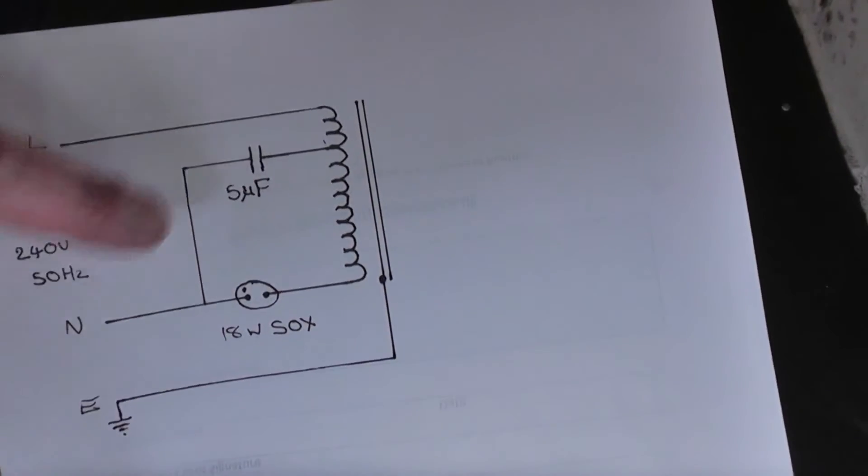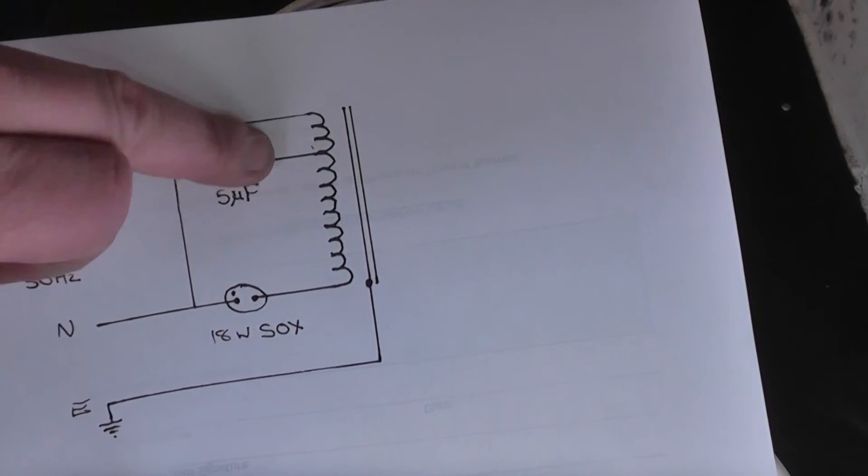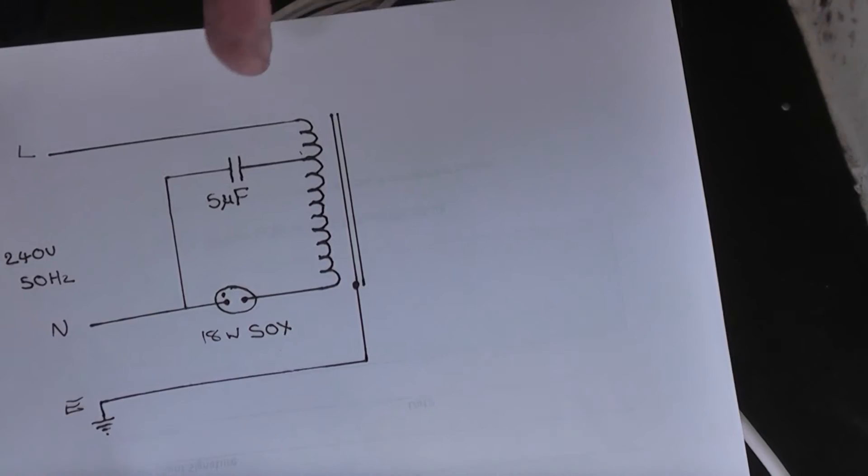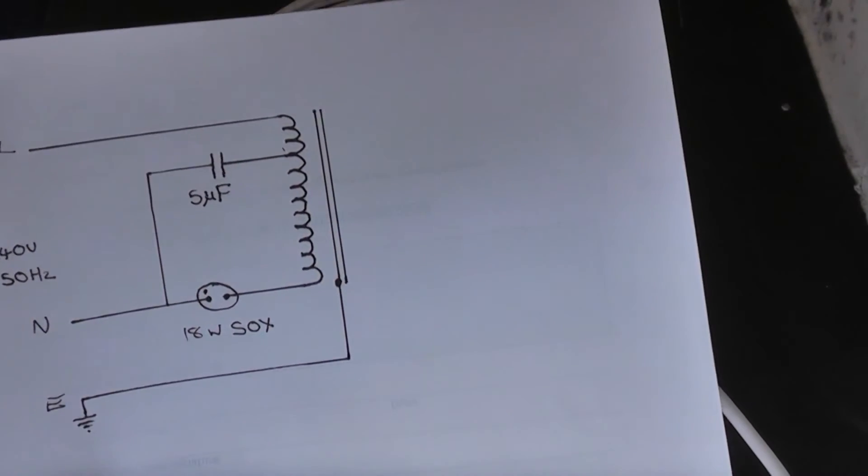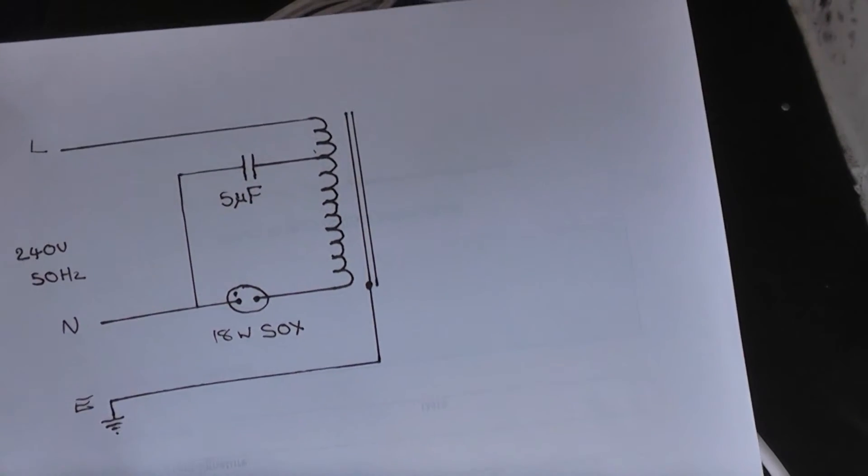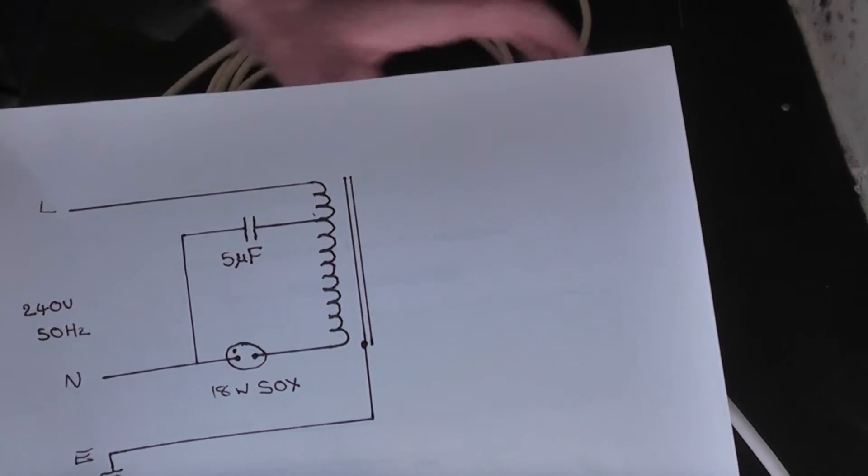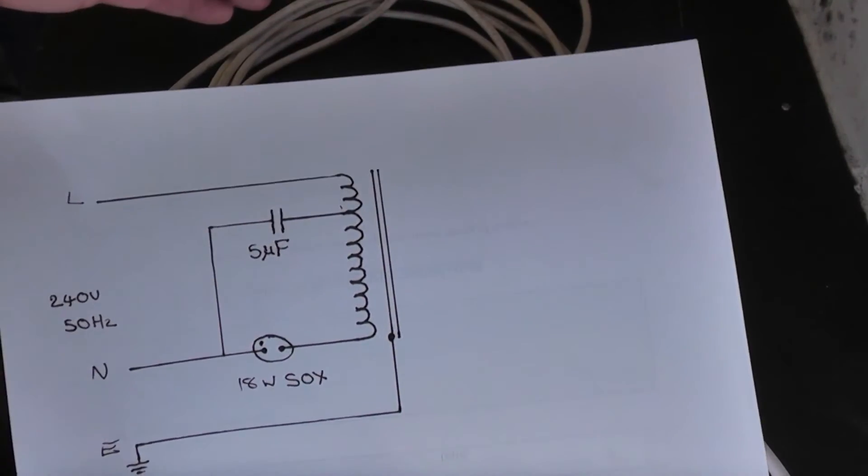So the neutral and the live are actually completing a circuit through this capacitor through these few turns on the ballast. So this is actually acting as an auto transformer which steps the voltage up to a couple of thousand volts which is enough to ionise the low pressure gas mixture inside.